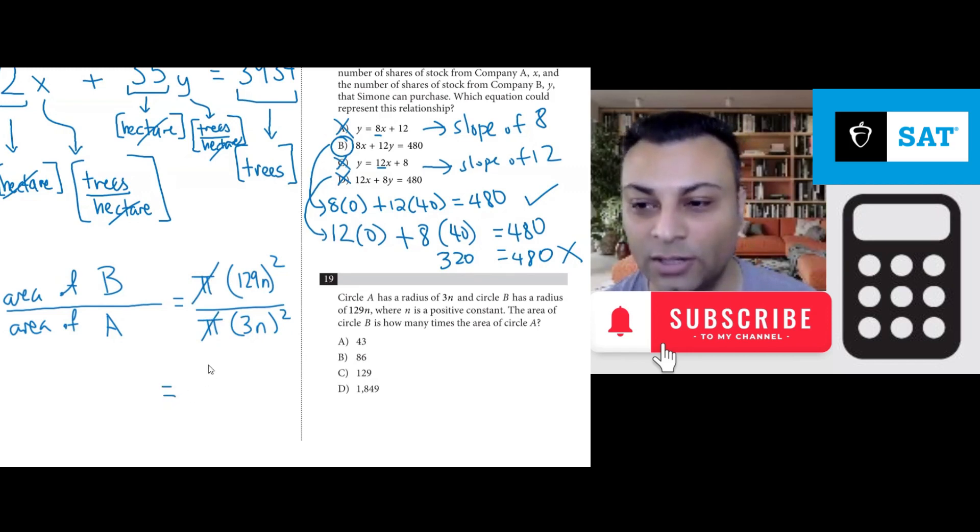You wind up with 129 squared times n squared when you expand this. Let's keep in mind when you have two items, x, y raised to an exponent, this is the same as x to the m times y to the m. We know this from exponents.